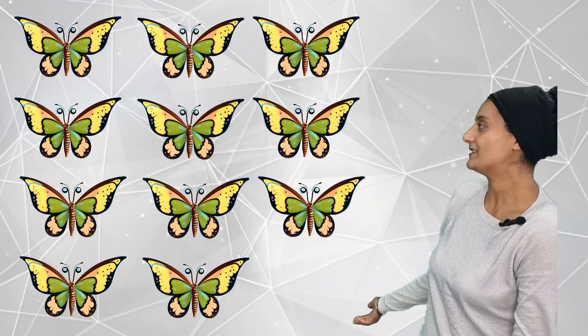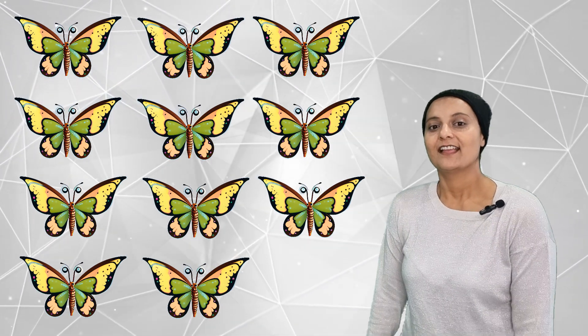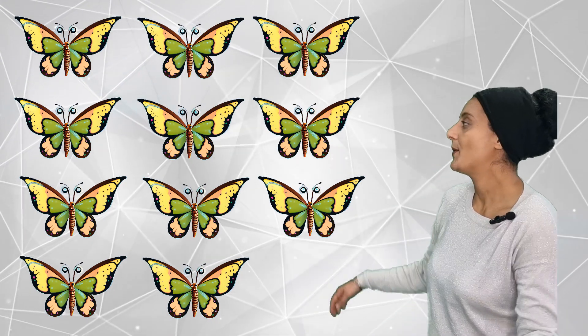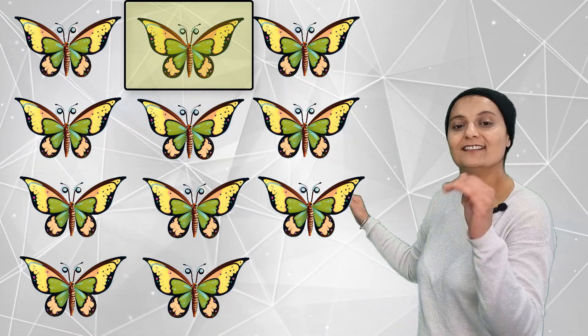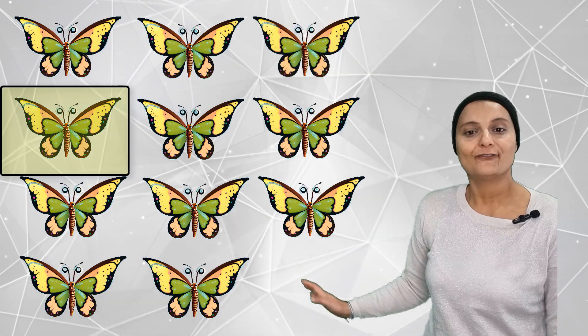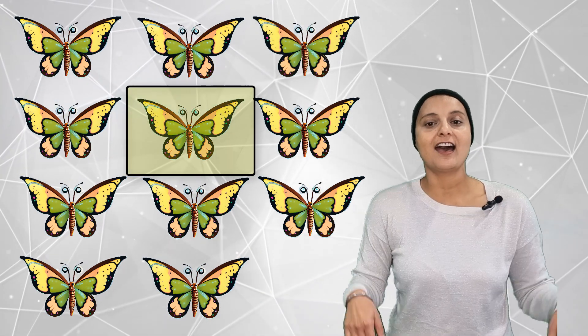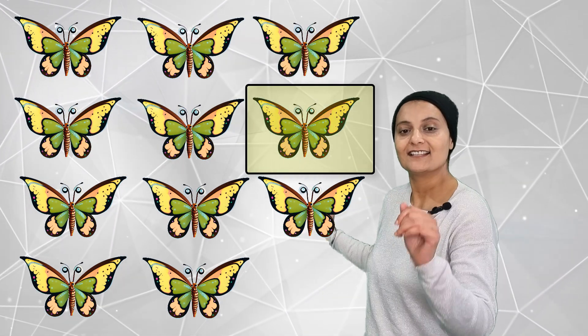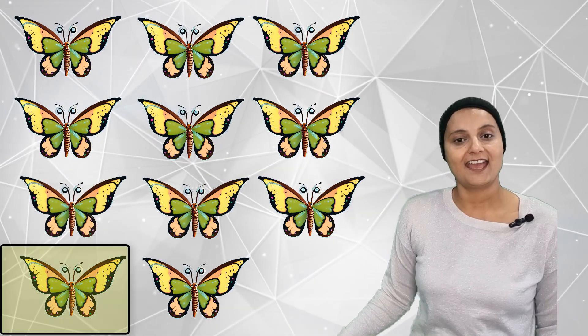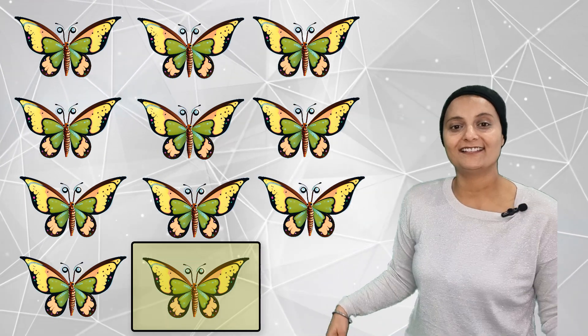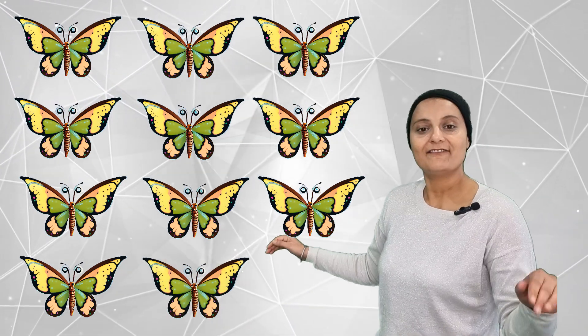Let's count how many fluttering butterflies there are. They are one, two, three, four, five, six, seven, eight, nine, ten, eleven. Eleven fluttering butterflies.